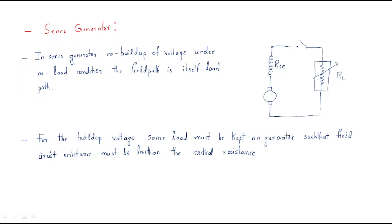In this session we will discuss the DC series generator. It is a DC machine operating as a generator, with the field winding connected in series with the armature. The circuit consists of the armature (A), the series field resistance RSE, and the load, all connected in series.